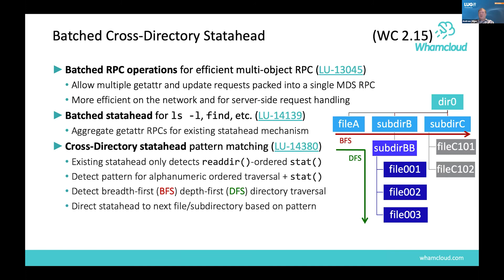Another improvement in this area is batched RPCs. When doing statahead after a readdir returning a thousand entries, a single RPC can fetch a thousand attributes and return them to the client. This is similar to readdirplus but not identical, since attributes are not included with the readdir itself — only the attributes of files expected to be accessed are fetched. The system can prefetch attributes in bulk in alphanumeric order as well as directory order for higher efficiency.